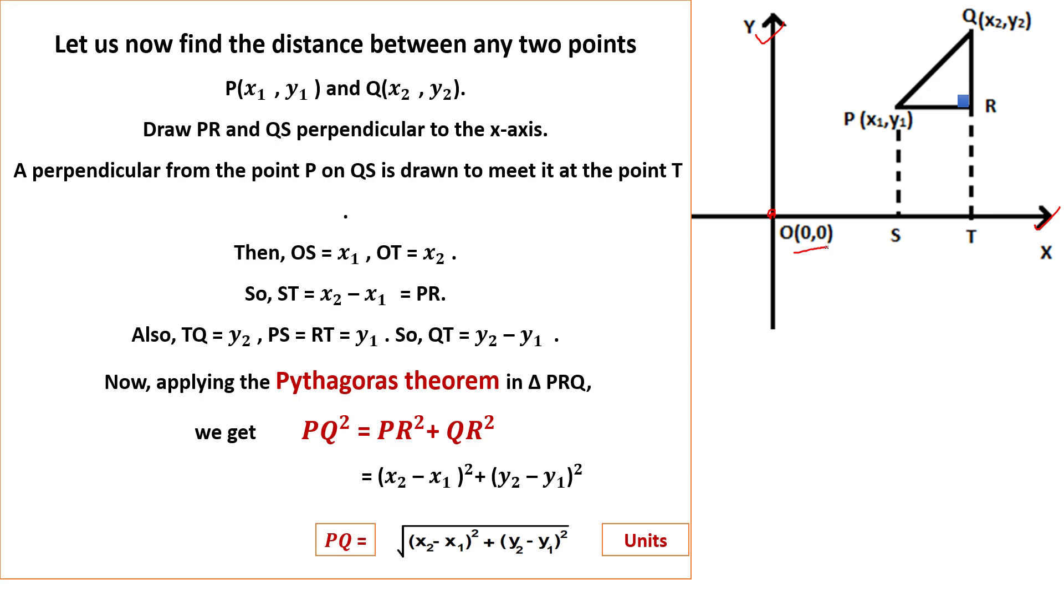So let us now find the distance between any two points. We let the first point P be (x1, y1) and the second point Q be (x2, y2). Now, we have to draw PR and QS perpendicular.